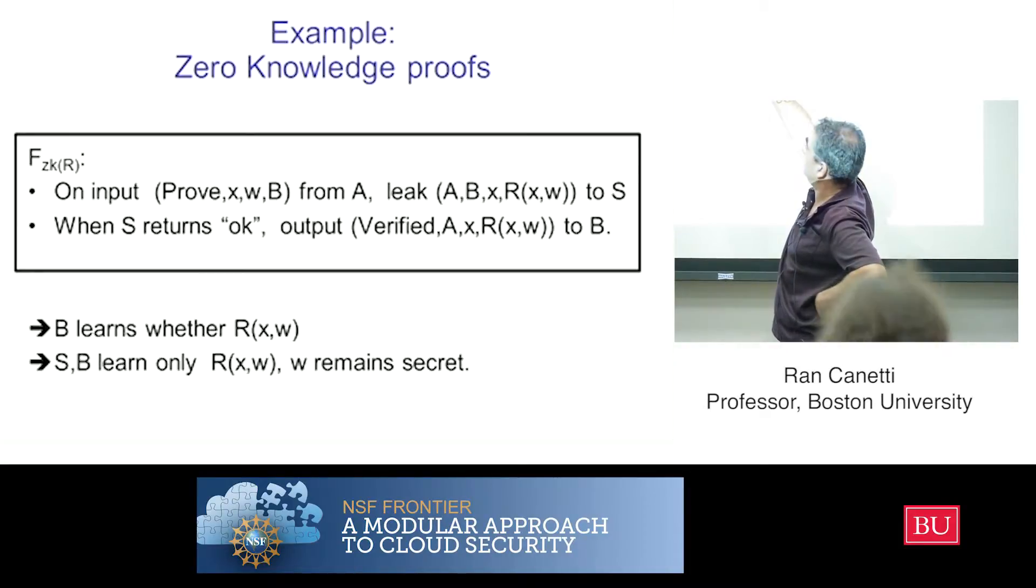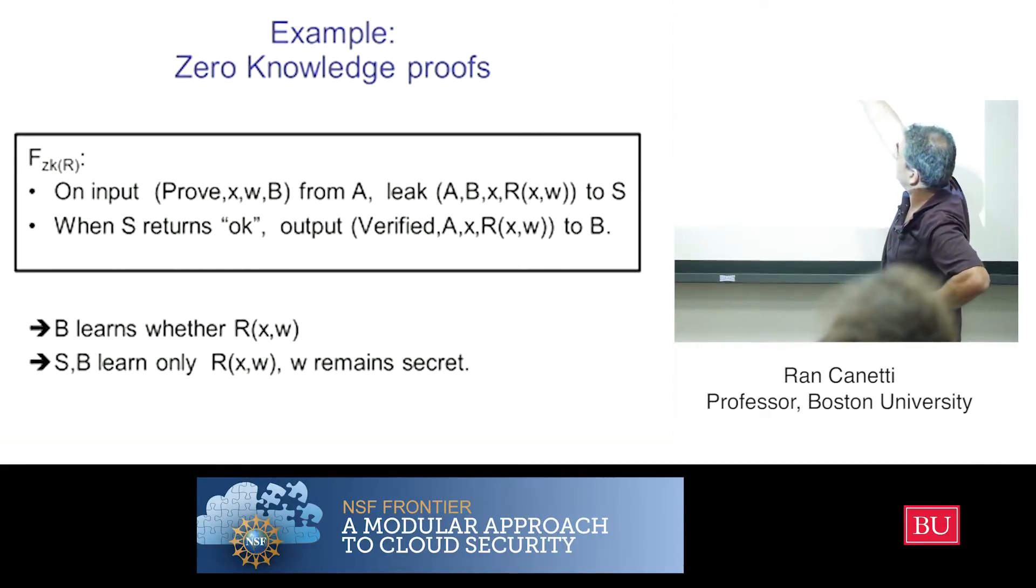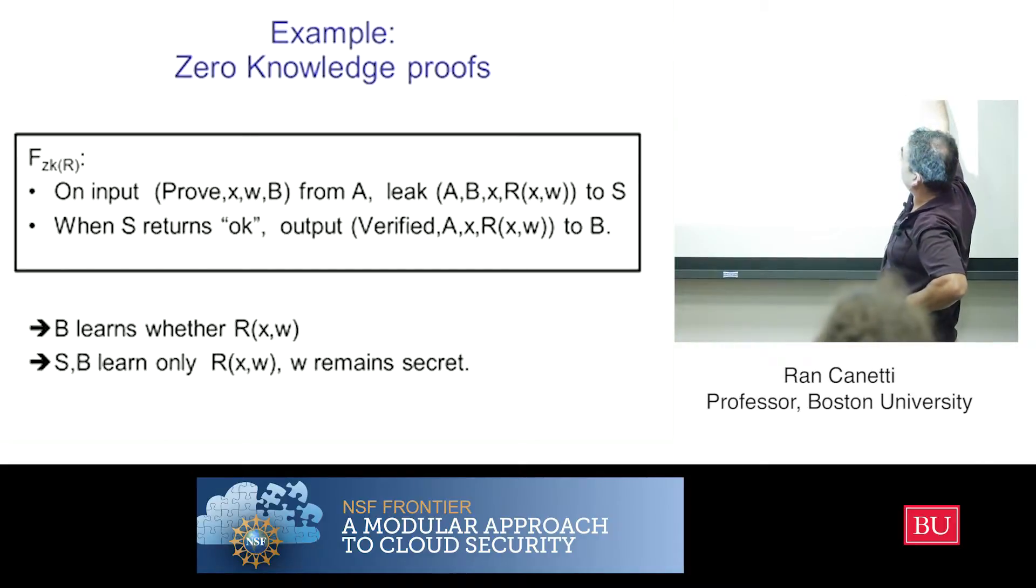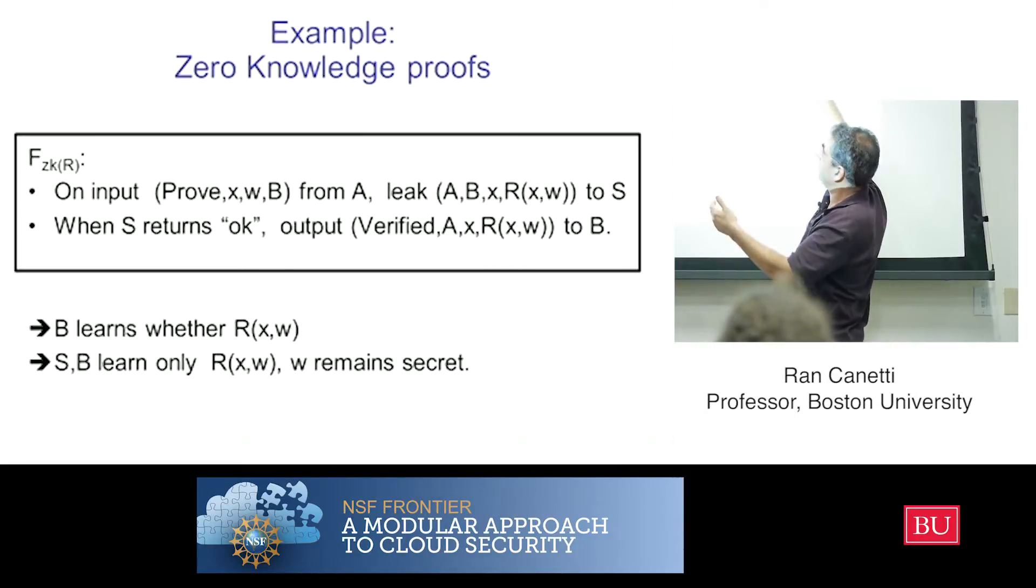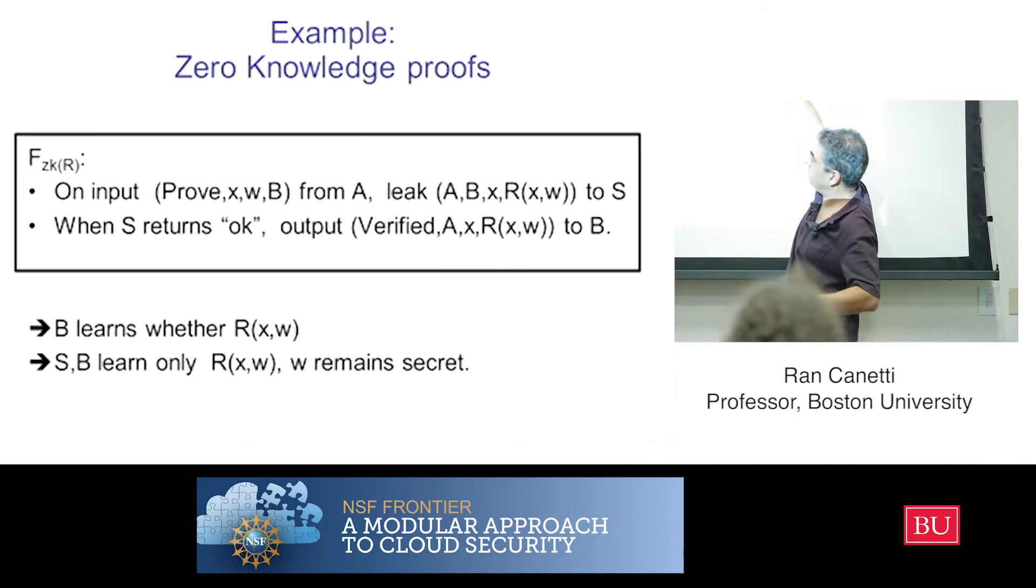So how are we going to capture that? So we are saying, okay, the functionality gets this tuple from the prover. And then it gives to the simulator—what does it give to the simulator? It has to tell the fact, but we're not trying to hide the fact that the interaction took place between A and B. And we're not trying to hide x, which is this common input, which is public.